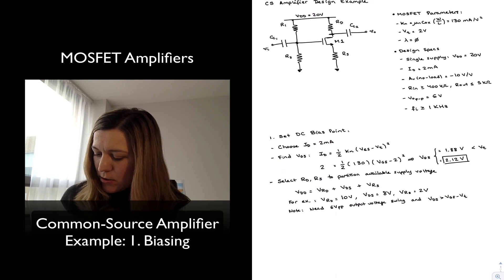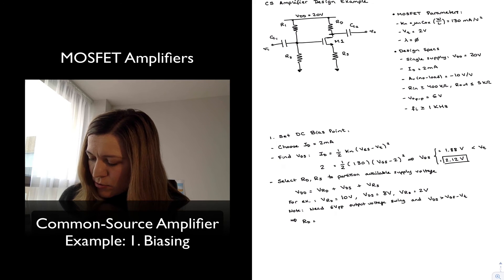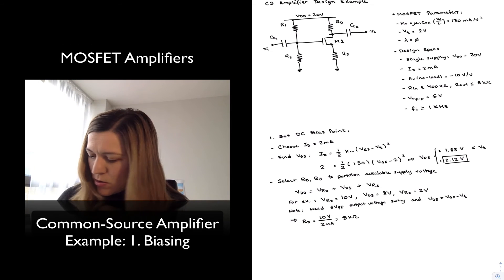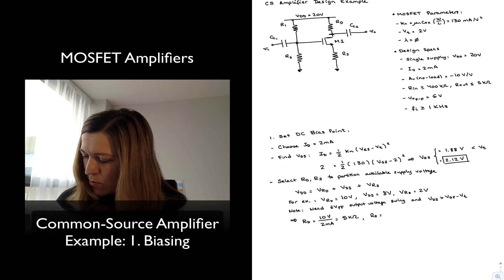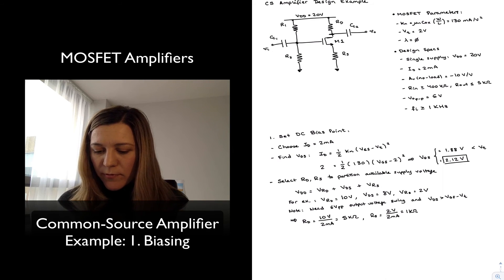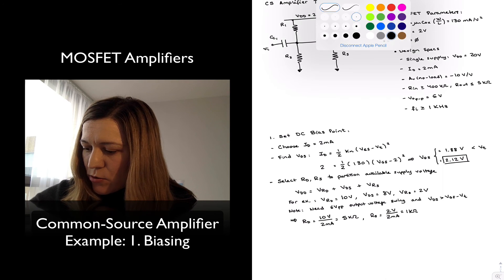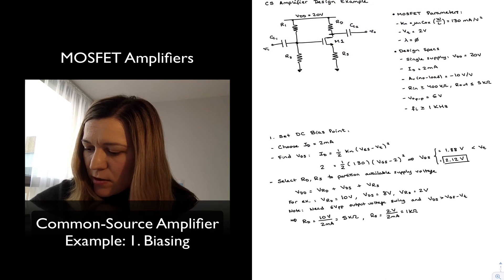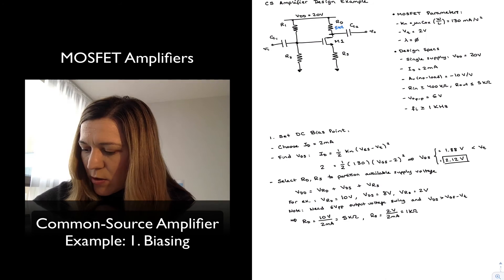So I can go ahead now and calculate my resistor values. Since I want VRD to be 10 volts and I have a current of 2 milliamps flowing through it, RD is equal to 10 volts divided by 2 milliamps, or 5 kilo-ohms. My RS will be 2 volts divided by 2 milliamps, or 1 kilo-ohm.